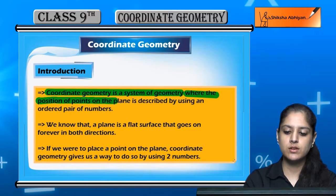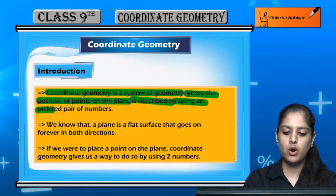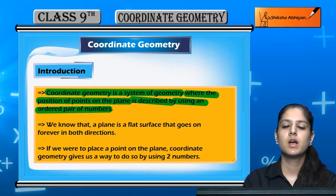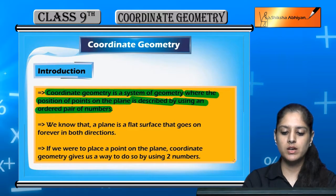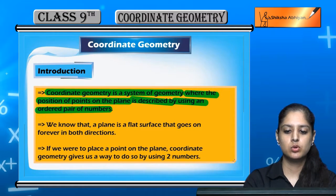Where the position of points on the plane is described by using an ordered pair of numbers. If a plane means a two-dimensional surface, if we have to show a position of points, then we take an ordered pair of numbers. What is an ordered pair of numbers? It means two numbers.